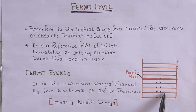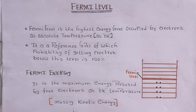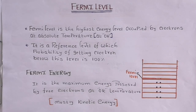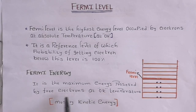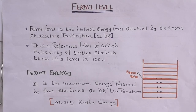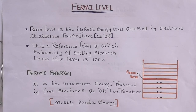The definition of Fermi energy is the maximum energy possessed by an electron at absolute zero temperature. In other words, it is the maximum energy — mostly kinetic energy — a free electron can attain at 0 Kelvin. Different materials have different Fermi energies, and it is also the value of the Fermi level at absolute zero temperature.